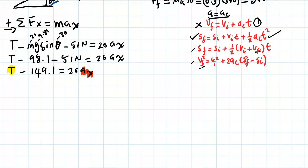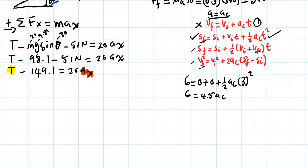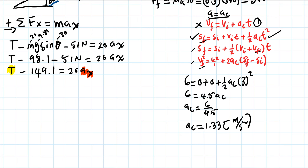Plugging in the given values: 6 = 0 + 0×t + ½·a_c·(3²). This gives 6 = ½·a_c·9 = 4.5·a_c. Therefore a_c = 6 ÷ 4.5 = 1.33 m/s².